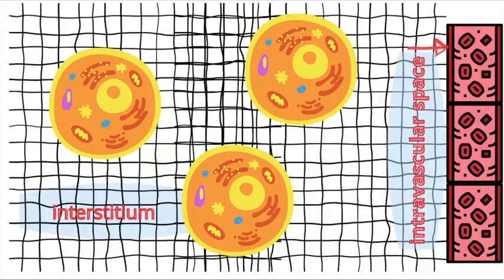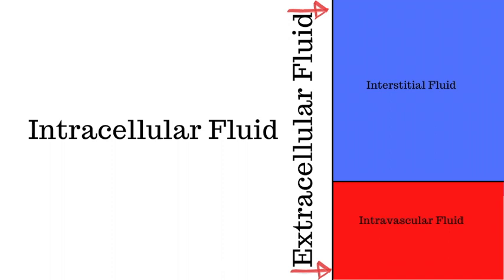That leaves one-third, or roughly 33%, as the extracellular fluid. The ECF is broken down into the interstitial space — the space outside and in between cells — and the intravascular space, which is our vessels. The interstitium comprises roughly 25% and the intravascular space roughly 8%, meaning the interstitium contains more fluid than the intravascular space.